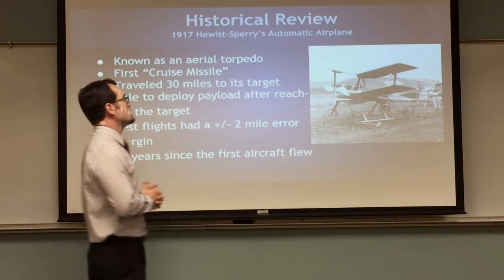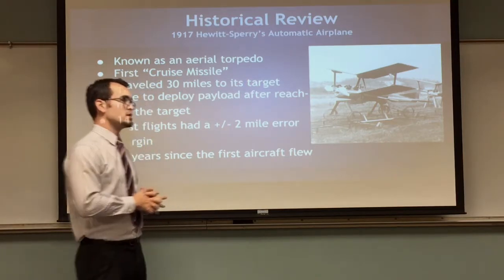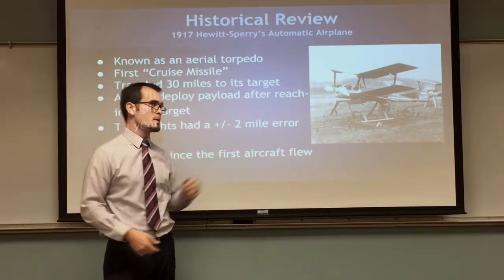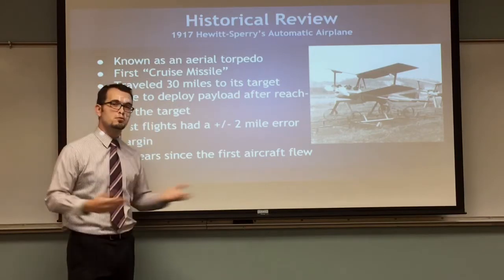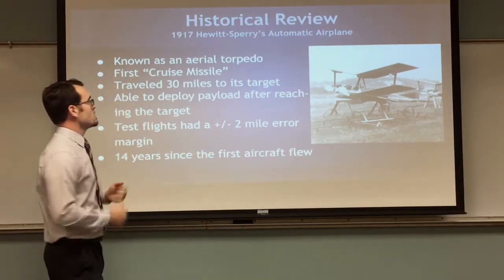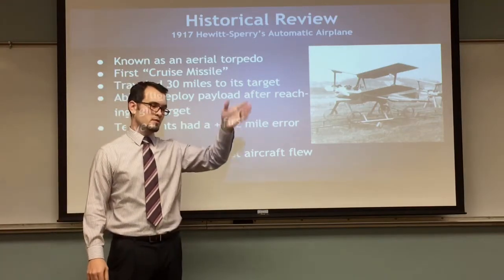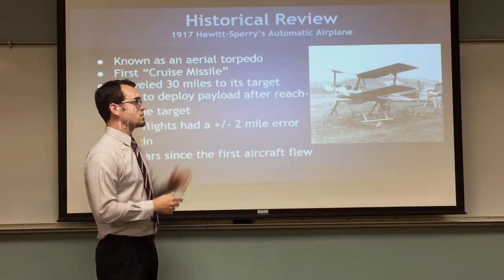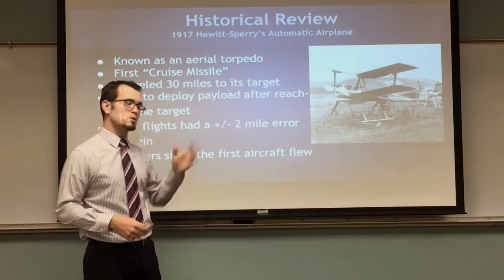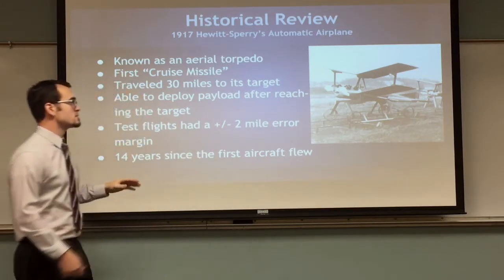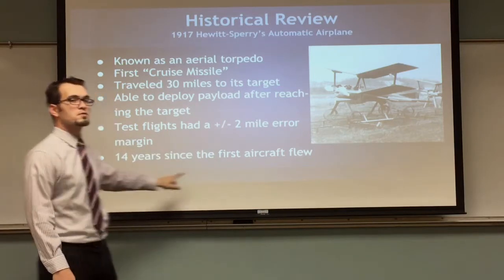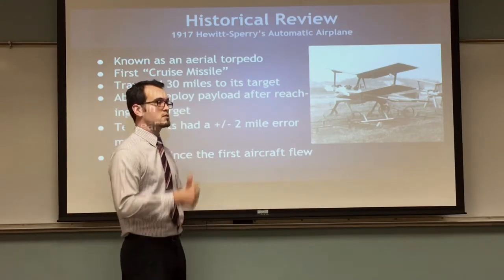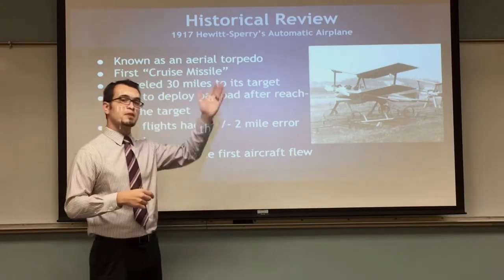In 1917, Hewitt-Sperry's automatic airplane was quite different from the aerial target. It was considered an aerial torpedo — also known as the first cruise missile. It had the ability to travel 30 miles to its target and deploy a payload; during test flights, that payload was simply a bag of sand. The margin for delivery was within plus or minus two miles. This was only 14 years after the Wright Brothers' first flight, making it pretty revolutionary — not only does it fly, but it can go a certain distance and deliver a payload remotely.